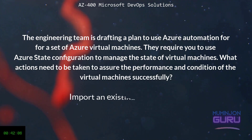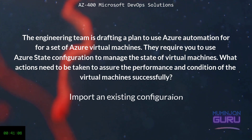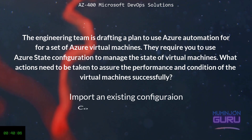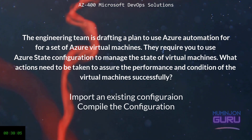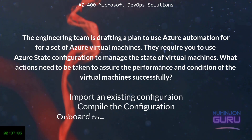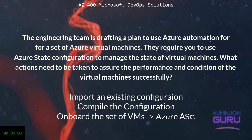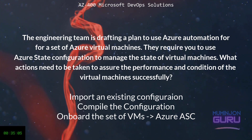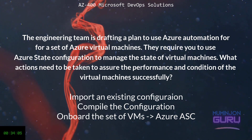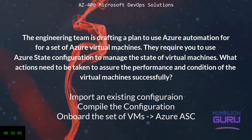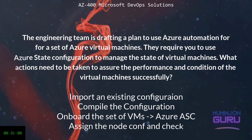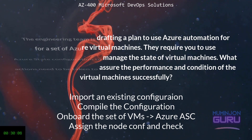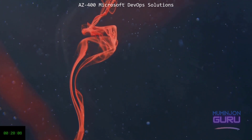The first step is to import an existing configuration. In the second step, you need to compile the configuration, then onboard the set of virtual machines onto Azure Automation State Configuration. Then you can assign node configuration. Finally, you can check the status of the nodes.